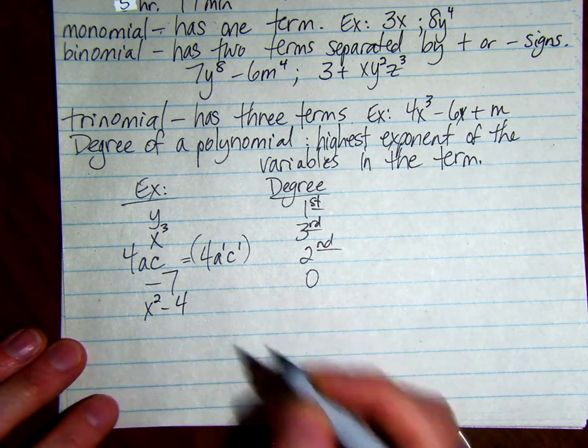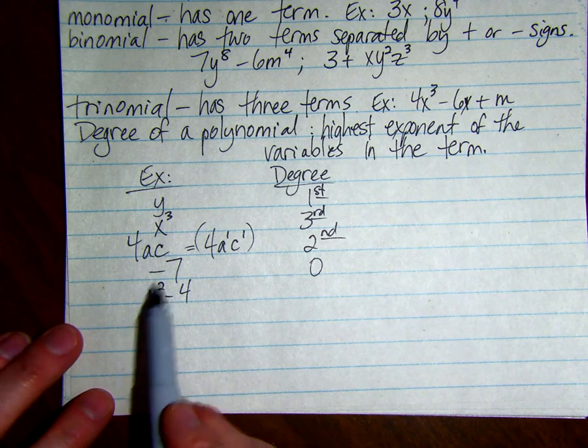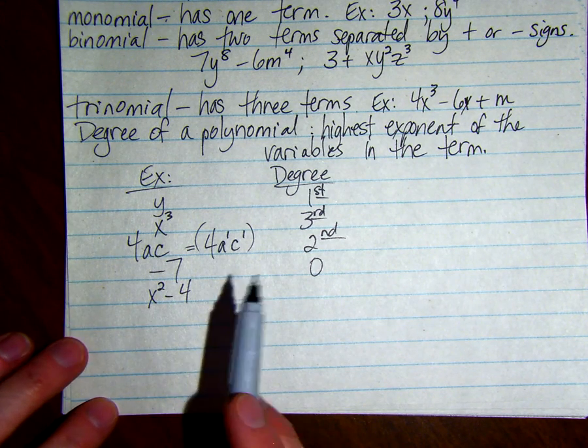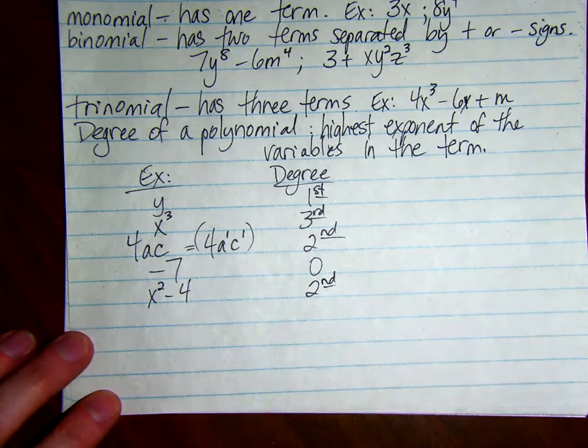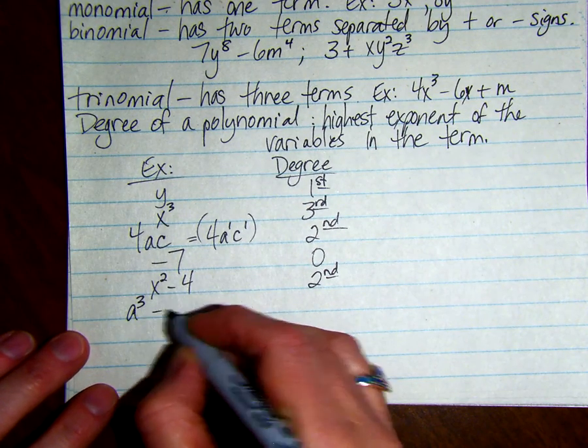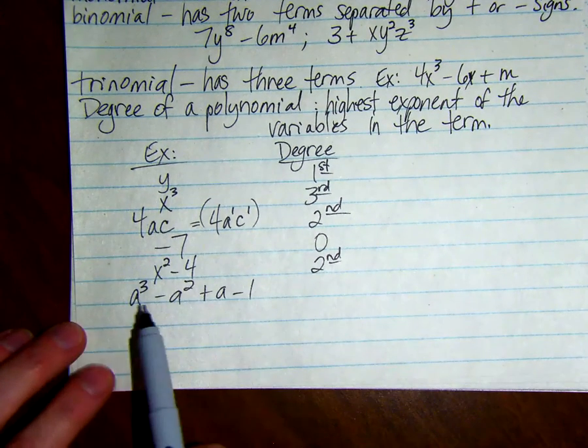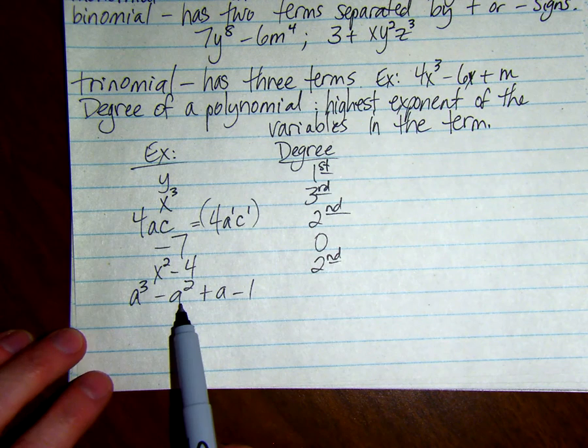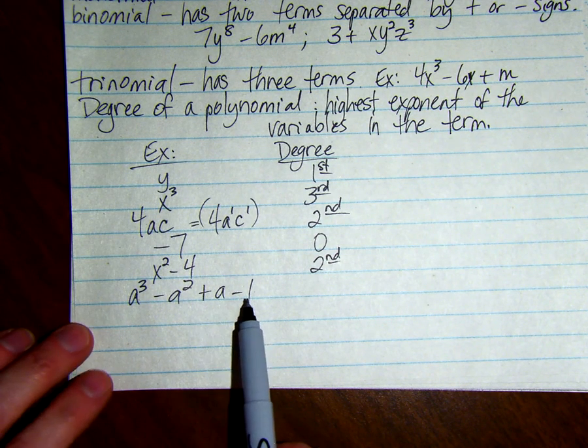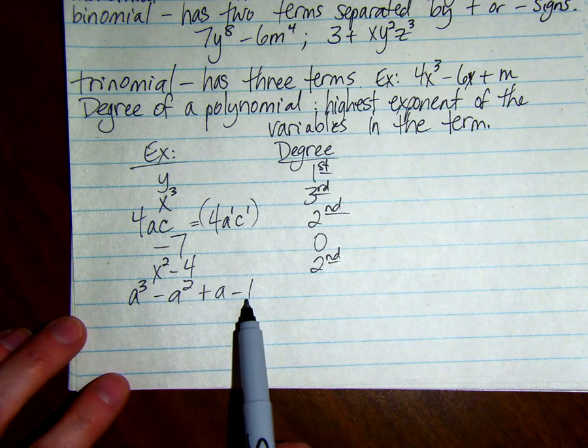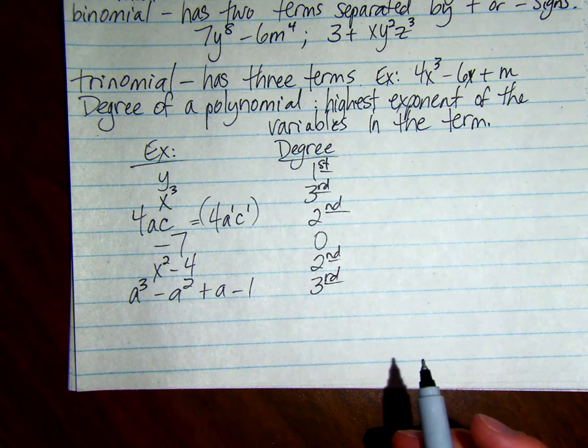x squared minus 4. This degree is 2, the first term. Second term is 0. It's the highest one for a polynomial, so this one is second degree. If I had a cubed minus a squared plus a minus 1, here's the degrees: this is 3, this one has a degree of 2, the a has a degree of 1, the negative 1 has a degree of 0. So the highest one is 3, so this one is third degree.